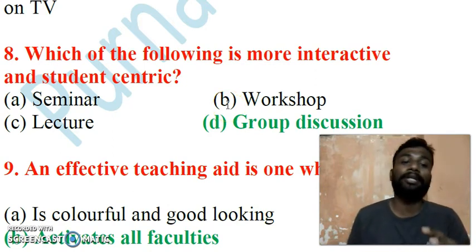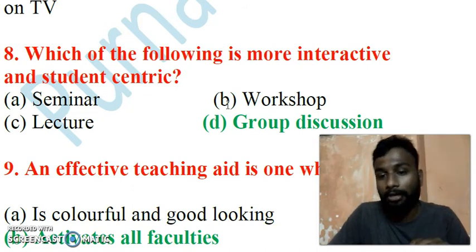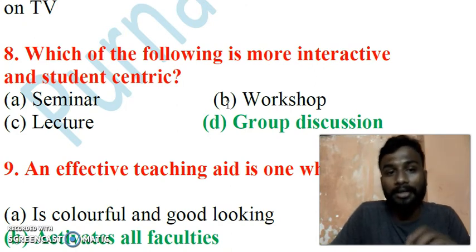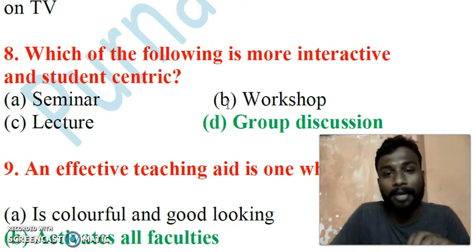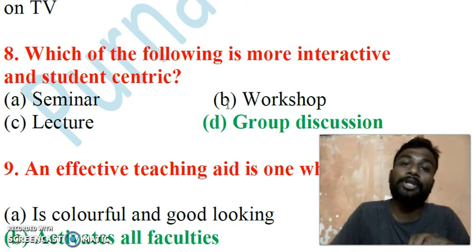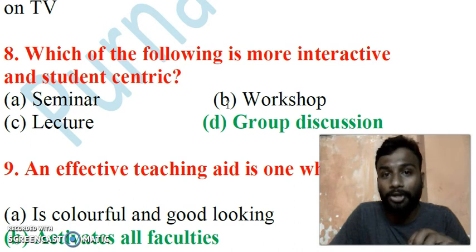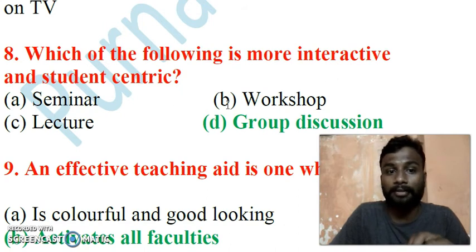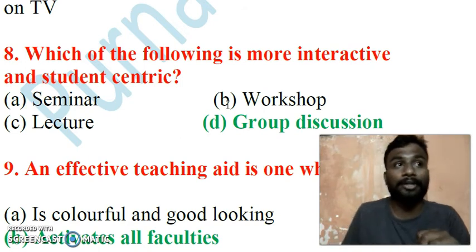Question 8: Which of the following is more interactive and student-centric? Options are: A) seminar, B) workshop, C) lecture, D) group discussion. More interaction happens in group discussion. Whenever group discussion arises, students get a good opportunity to express their views on the topic. It is both student-centric and more interactive in nature, so the correct answer is group discussion.